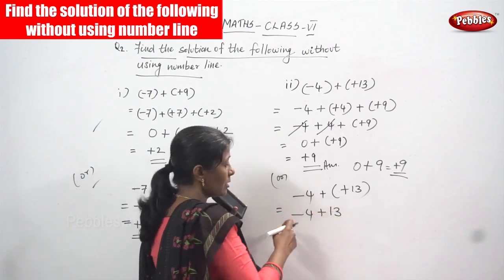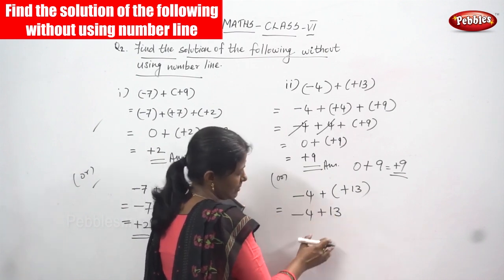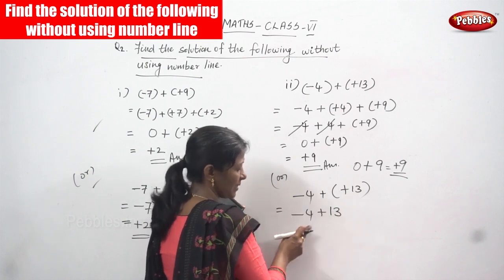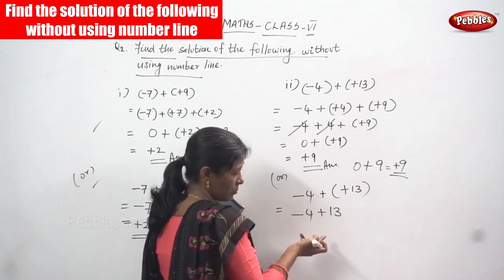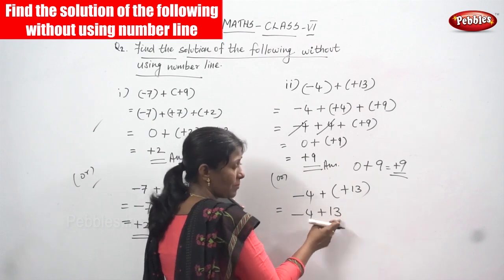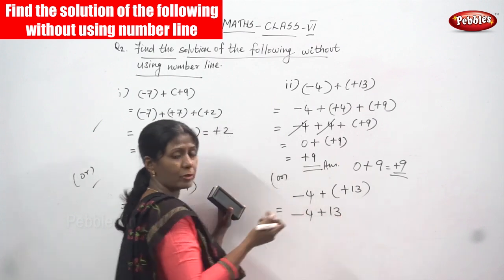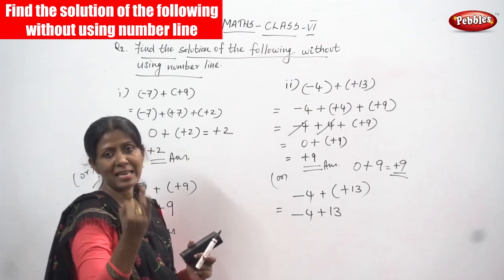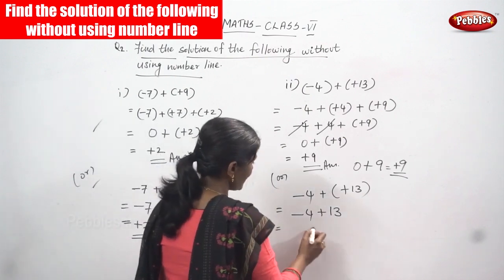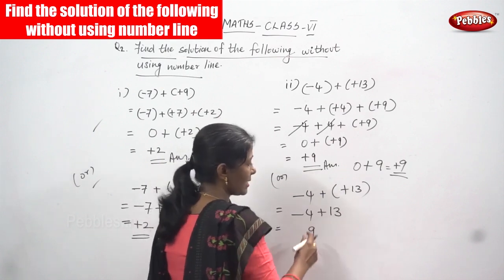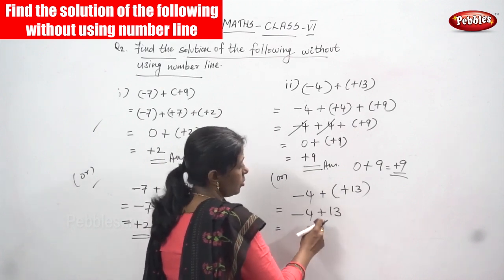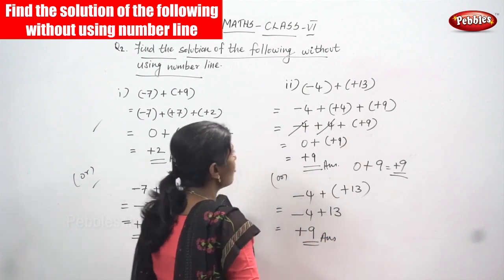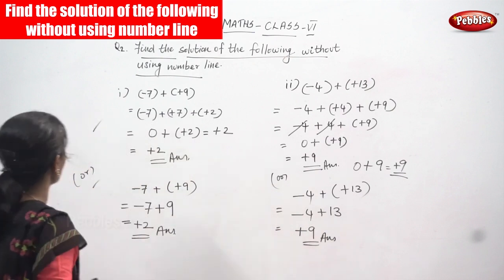First, do not look at the sign — look only at the numbers. Thirteen is the bigger number; from the bigger number subtract the smaller number, which is four. From thirteen subtract four: count five, six, seven, eight, nine, ten, eleven, twelve, thirteen — so nine is the answer. But what is the sign? The sign is very important — plus nine is the right answer for this question.